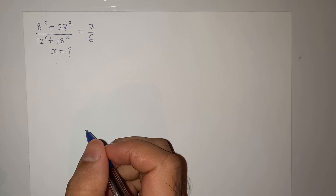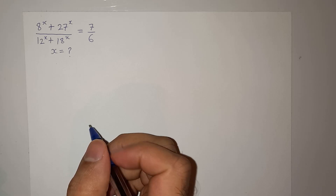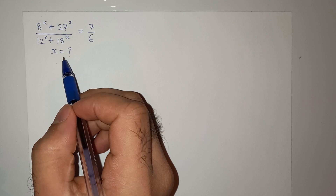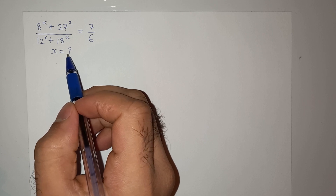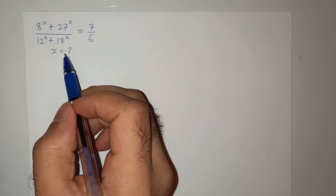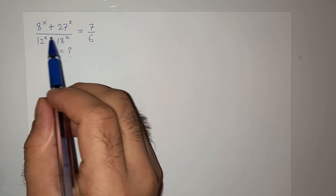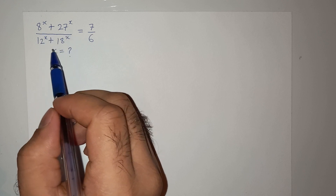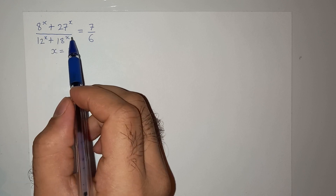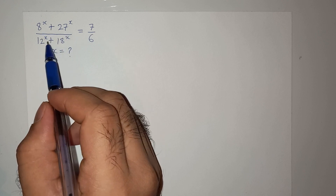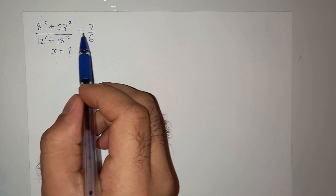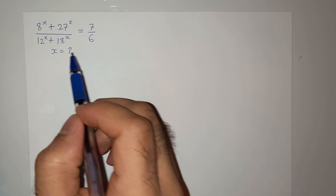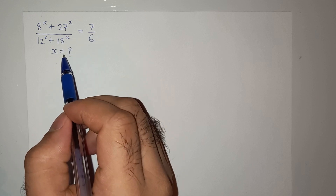Hello friends, I hope you guys are doing well. Today we have this question which was asked in the International Mathematics Olympiad competitive exam. The question is: (8^x + 27^x) / (12^x + 18^x) = 7/6. We need to find the value of x.